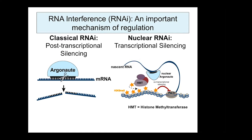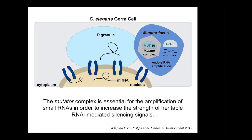Both classical and nuclear RNAi occur in somatic cells and in germ cells. In the germ cells, many of the proteins associated with RNAi, including multiple Argonaute proteins, localize to paranuclear membraneless organelles such as the P granule and the adjacent mutator focus. An important amplification step takes place in the mutator focus, where small RNAs are taken to the mutator complex with mRNAs to be replicated by an RNA-dependent RNA polymerase. The mutator complex is centered around the protein MUT-16, which acts as a scaffold for all components needed for this amplification step.